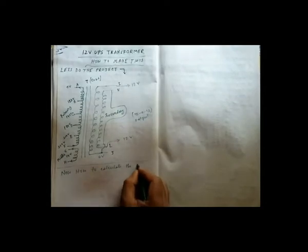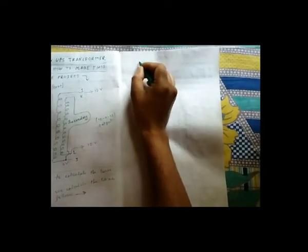As you can see, now the question arises, how to calculate the turns of the wire. For this purpose, first we have to calculate the core area, CA, as it is AEI core transformer, so I am drawing the image of this.